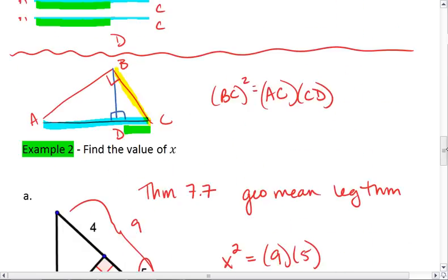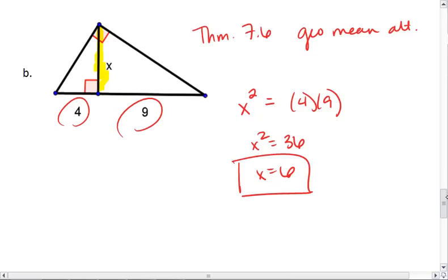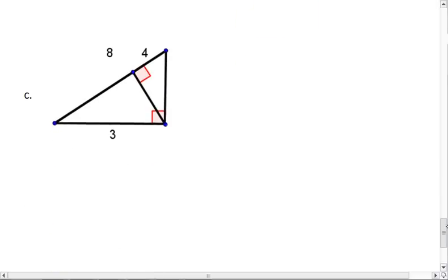And looking back up. Yep. We used the right equation. Our altitude is the geometric mean of the two parts of the hypotenuse. Lastly, part C.